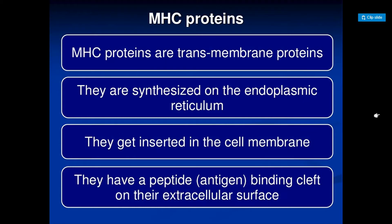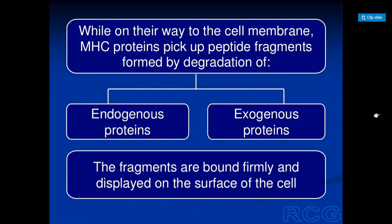Some properties of MHC proteins: MHC proteins are transmembrane proteins. They are synthesized on the endoplasmic reticulum and get inserted into the cell membrane. They have a peptide antigen-binding cleft on their extracellular surface. While on their way to the cell membrane, the MHC protein picks up peptide fragments from the degradation of endogenous proteins and exogenous proteins, and these fragments are bound firmly and displayed on the surface of the cell.